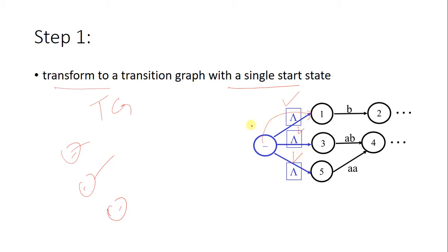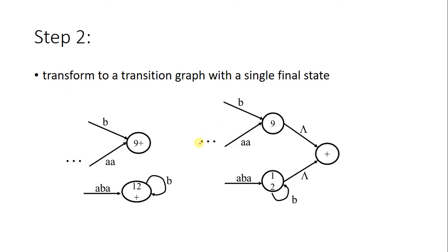In Step 2, we transform the graph into one with a single final state. If we have two final states, we add a null transition and make a single final state.